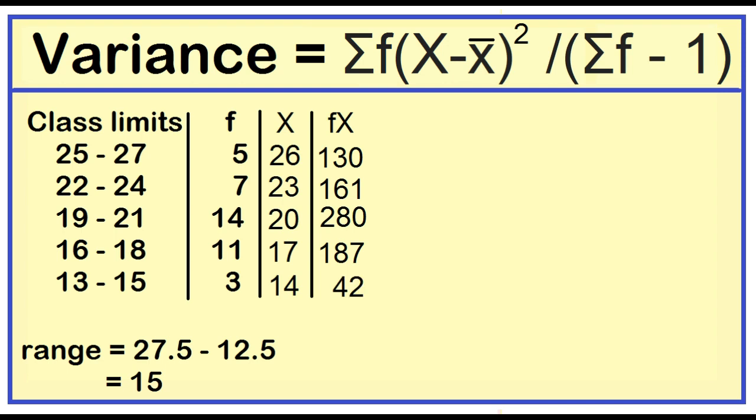3 times 14 equals 42. Find the sum: 130, 161, 280, 187, and 42 equals 800. Find also the total frequency. 5 plus 7 plus 14 plus 11 plus 3 equals 40.